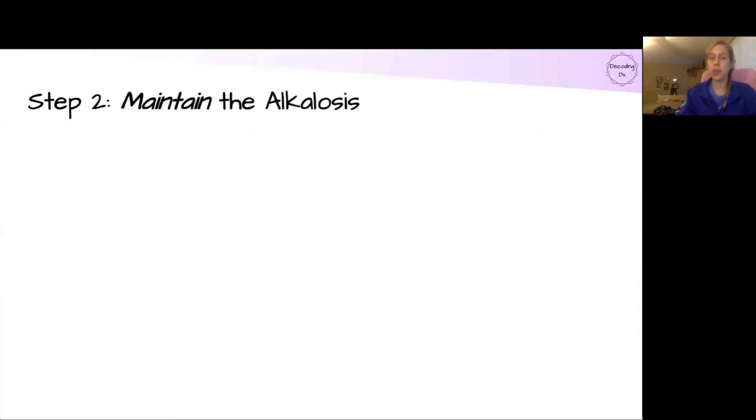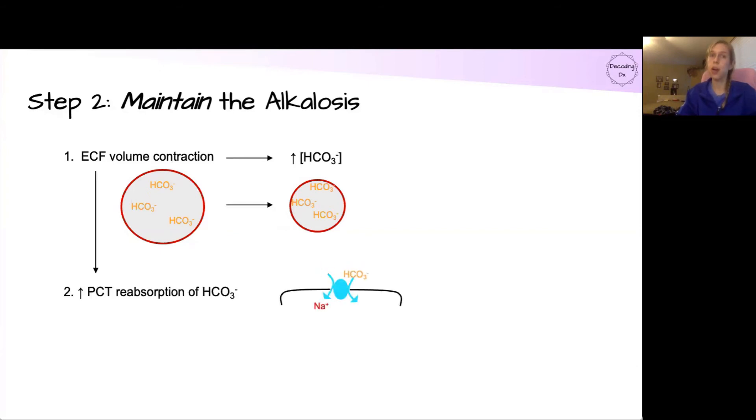And then, as always, we have to have paired processes going on to help maintain the alkalosis. We talked about earlier the reason why the aldosterone is active in the first place is because the body senses a lower volume state. When there's volume contraction, we can lose extra volume without changing the solutes, which will lead to an increased concentration of that solute. When we're talking about bicarbonate, this means alkalosis. We're also going to have the proximal convoluted tubule reabsorbing the bicarbonate, again, because the body thinks that we're in a lower volume state because of the diuresis.